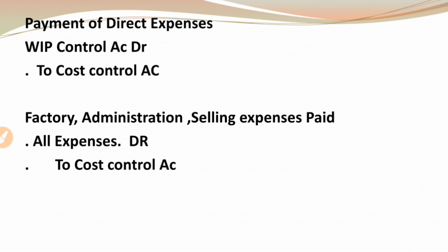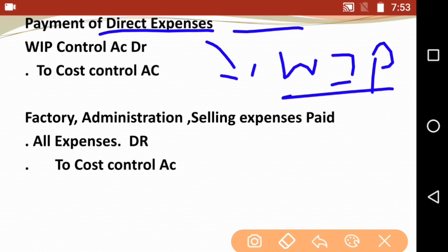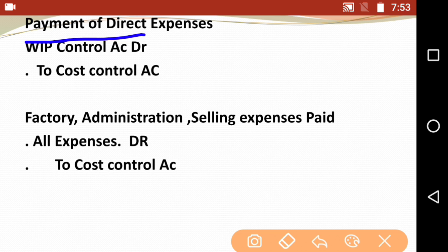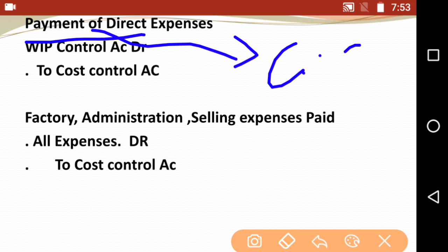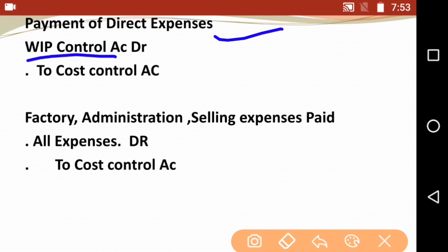Next is payment of direct expenses. When direct expenses are paid, the entry is: direct expenses control account debit to cost control account. This also transfers to WIP. The key rule is: wherever the word 'payment' appears, cost control account is always credited. So for payment of direct expenses: WIP control account debit to cost control account.